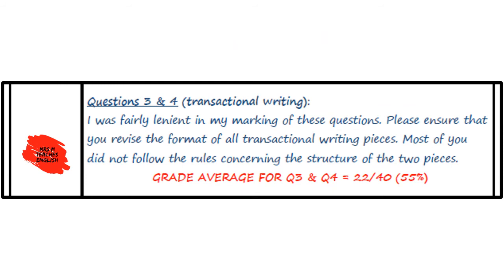The last two questions of paper 2 — questions 3 and 4, the transactional writing — were not that well answered, though I was fairly lenient with my marking. I'm concerned that a number of you have no clue what the format of specific pieces must be. If there's a speech, a formal letter, or an open letter, you need to know how to write them. Remember the pages in the X-Kit book were given to you in the exam information booklet — you really need to revise the formats. Have a look at the two marks written below each of your pieces and read all the information on the IEB transactional writing rubric. A 55 percent average for transactional writing is 10 percent below where it should be.